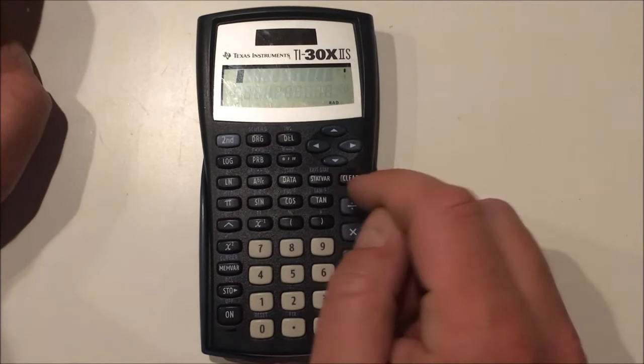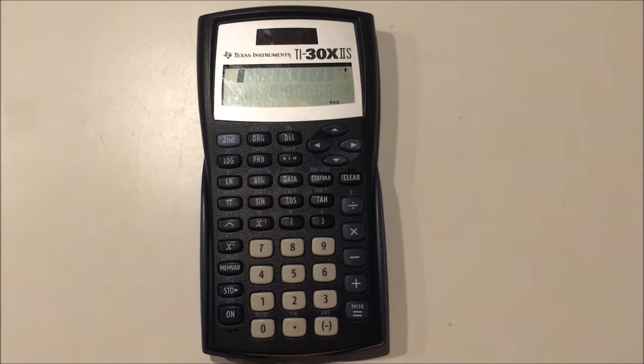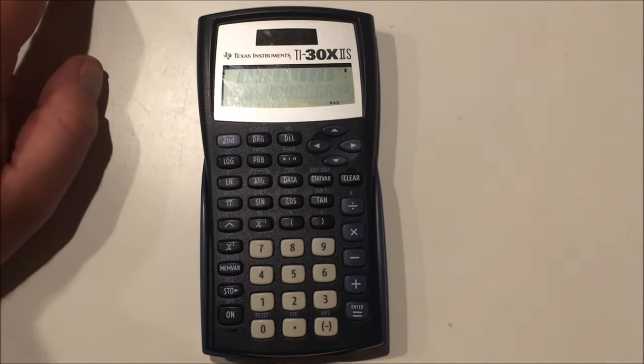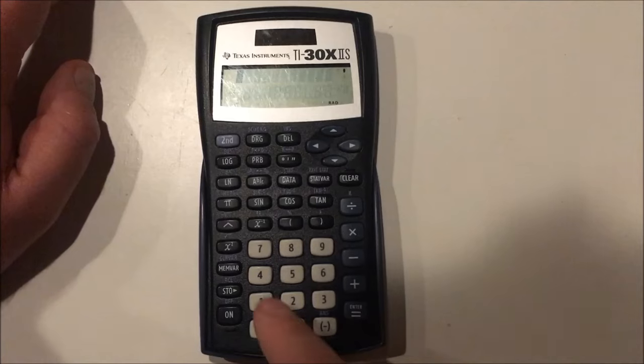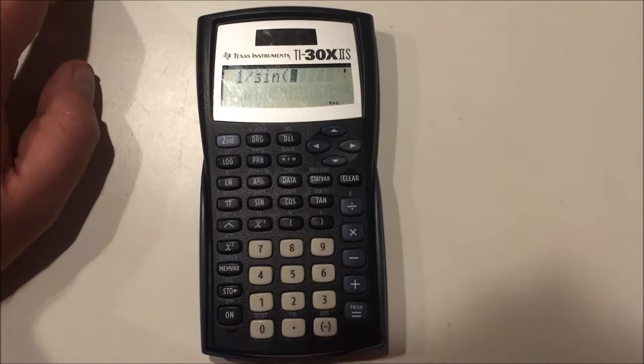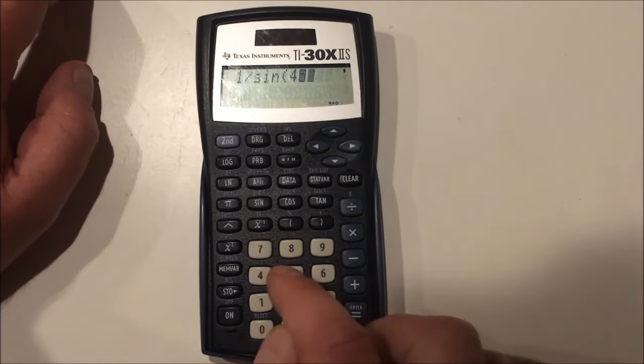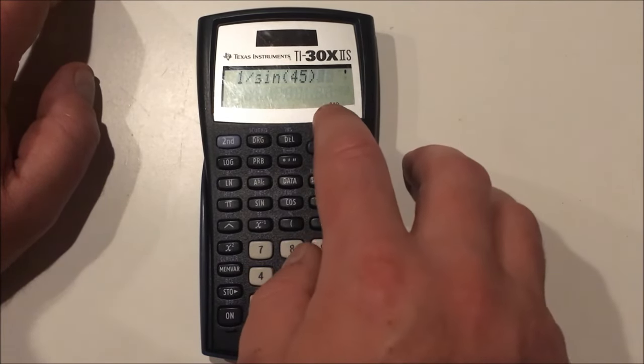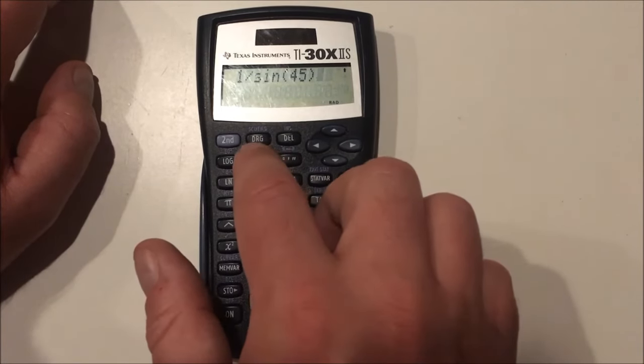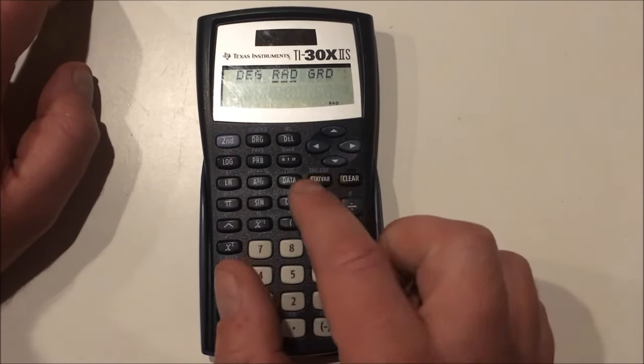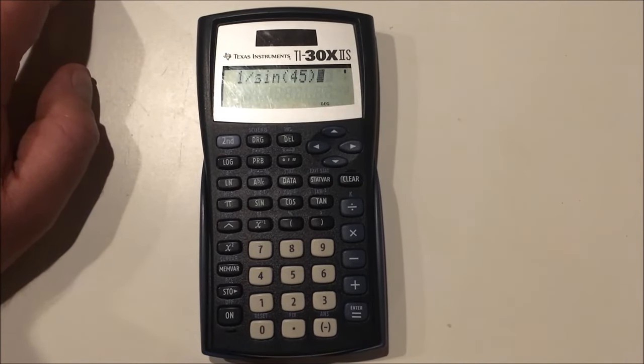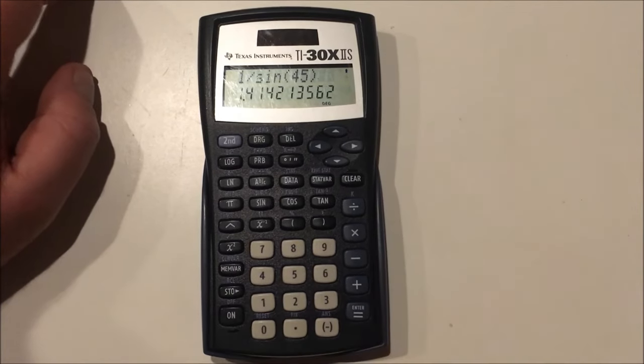Now, what if you wanted to do a reciprocal trig function, like cosecant, for example, which is the reciprocal of sine. That's not the same thing as inverse sine. It's a reciprocal trig function. You would have to do the following. 1 divided by sine. For example, 45 degrees. Actually, 45 radians. If you realize you're in the wrong mode, even in the middle of an expression being created, you can go to DRG button and switch to your proper mode. So this will evaluate the cosecant of 45 degrees in this calculator.